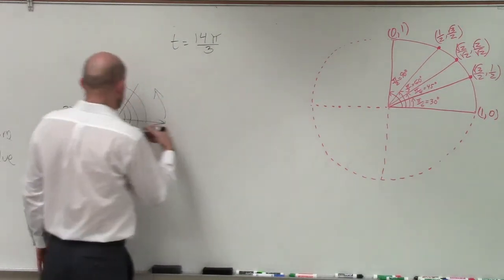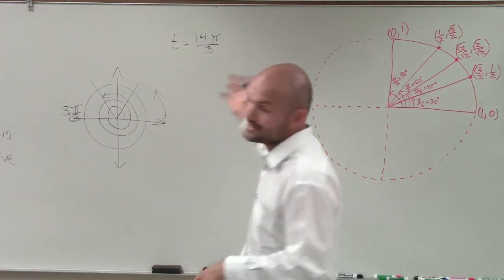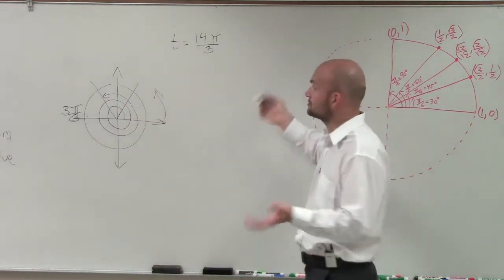So remember, by finding the smallest coterminal angle, we can just add and subtract 2π. Well, I'm not going to want to add 2π. That's not going to give me any angle that's smaller. So I'm going to have to subtract 2π.